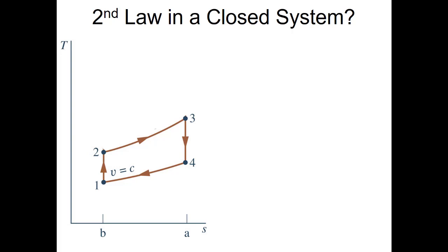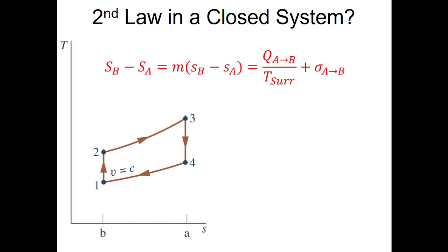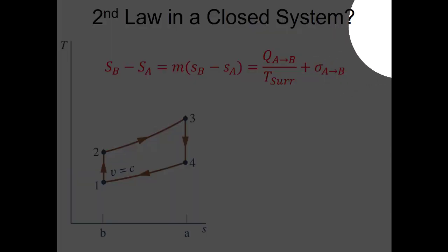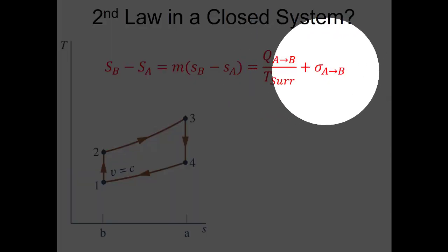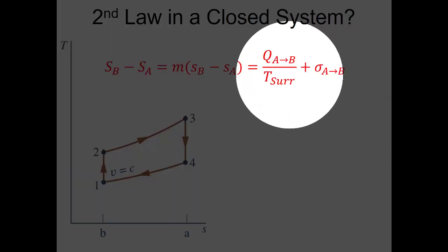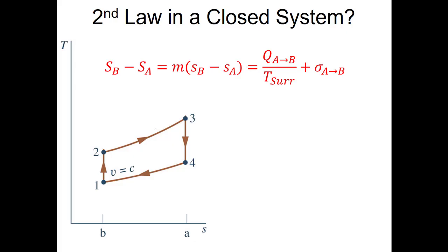For the second law applied to closed systems: delta-S = m·delta-s = Q/T + sigma. For all the idealized processes in our air standard analysis, we will assume...